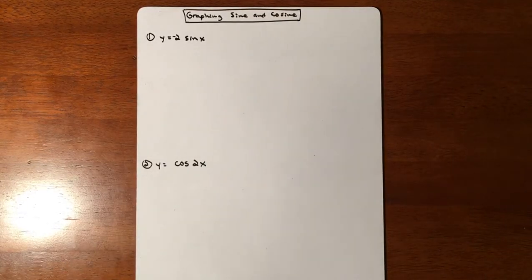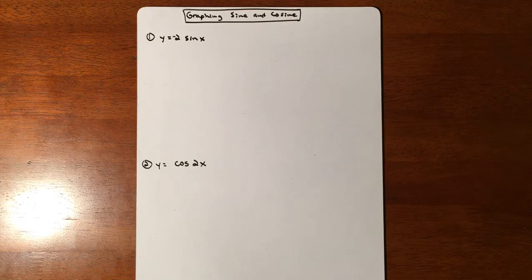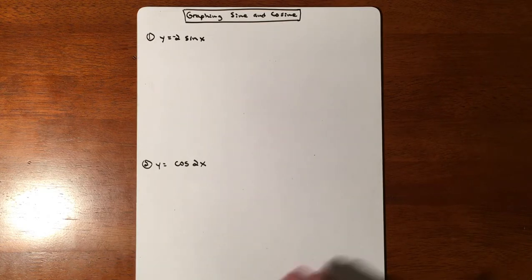In this lesson we're gonna graph some sines and cosines. We're just gonna be messing with the amplitudes and the periods on these. So we're gonna do four of them just to kind of get you a feel for what we got going on.